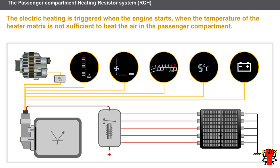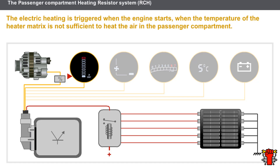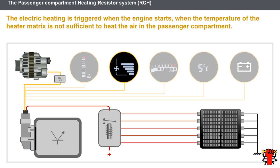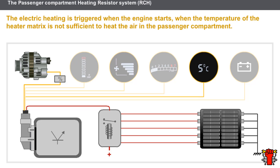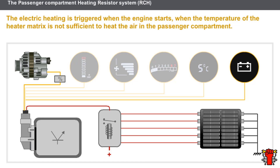Let us now look at the conditions for triggering the RCH. The electric heating is triggered when the engine starts and when the temperature of the heater matrix is not sufficient to heat the air in the passenger compartment. The triggering of the RCH depends on the engine having started and the engine temperature. The operation of the RCH also depends on the passenger compartment ventilation speed, the external air temperature, the battery voltage, authorization of the injection computer, and the power available from the alternator.